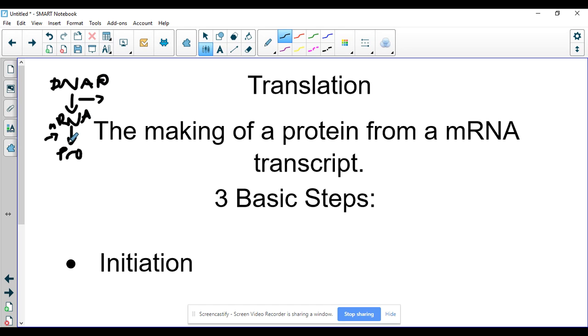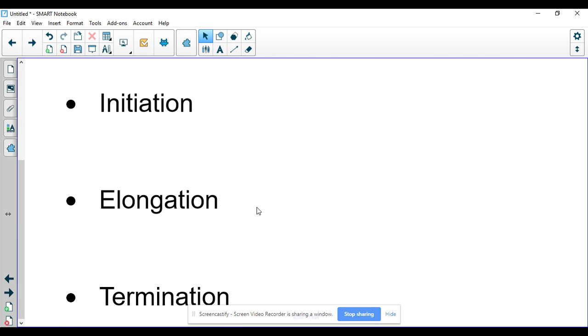With translation, we're going to take that mRNA and we're going to turn it to a protein. We do have three basic steps. These are going to look very familiar. You should have seen these when we talked about replication. They have these same names: initiation, elongation, and termination.